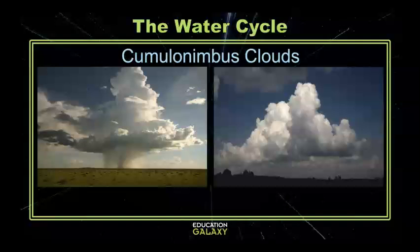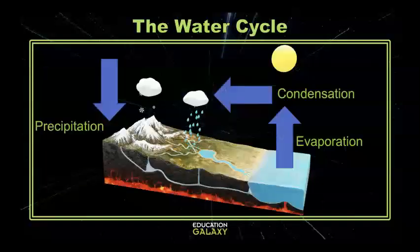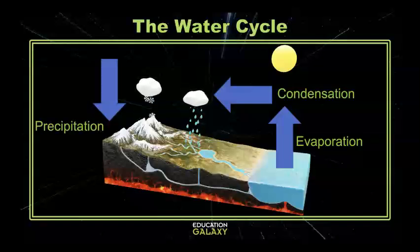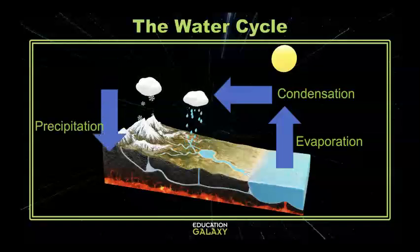Once the clouds get heavy enough with rain, they start to lower and become darker. Dark, heavy clouds full of rain are called cumulonimbus clouds. Once the water has built up, the water comes back down to earth through precipitation. Precipitation is just water falling back to earth.